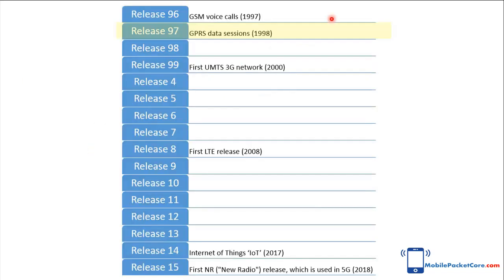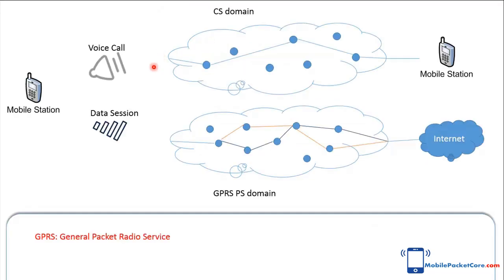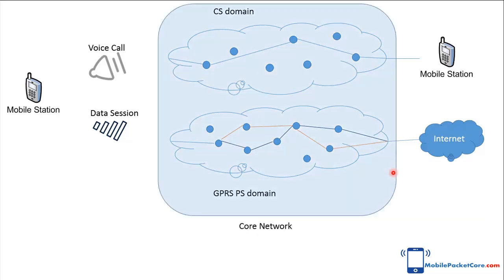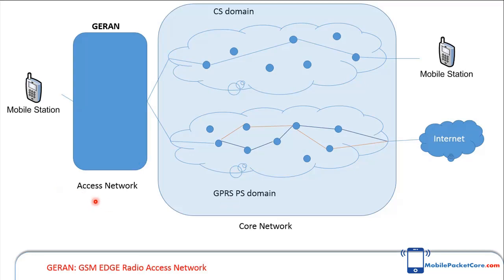Therefore, in 1998, 3GPP introduced Release 97 of the standards, in which the network architecture was enhanced to support data sessions. This was done by introducing GPRS, General Packet Radio Service, which contains a PS domain to handle data sessions. The core network describes the combination of the CS domain and the PS domain in the mobile network.